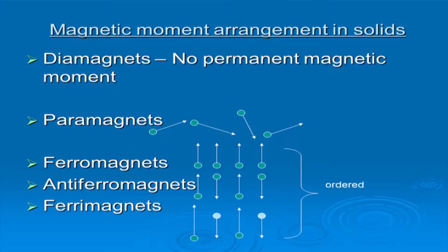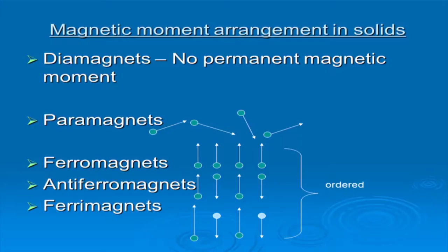Diamagnets have no permanent magnetic moment. There is no magnetic moment unless you apply a magnetic field. You apply a field, you start seeing a moment; once the field is removed the moment is also gone. That is why there is no permanent magnetic moment. This diamagnetic contribution will be there in all electronic orbits wherever there is an electron — whether it dominates or not is a different issue.